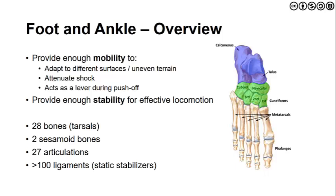What complicates things further is that through this complex we have 28 bones composed of the tarsals, two sesamoid bones on the plantar aspect of the first ray, 27 articulations, and over 100 ligaments contributing to the static stability of the foot and ankle.